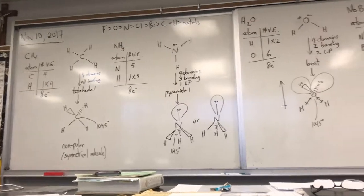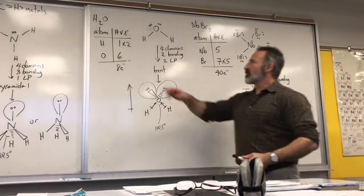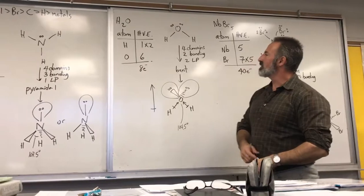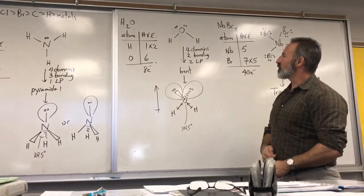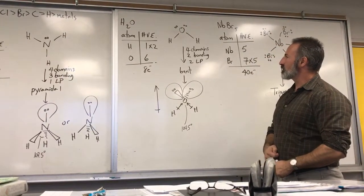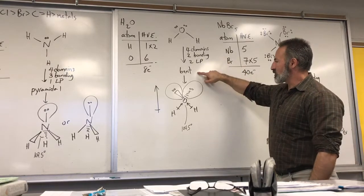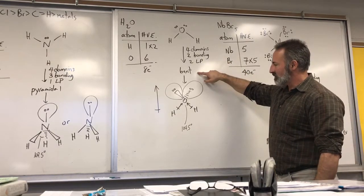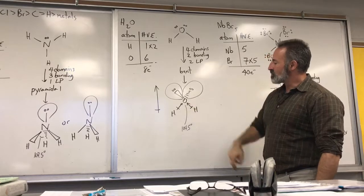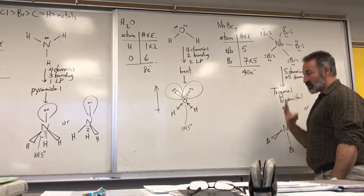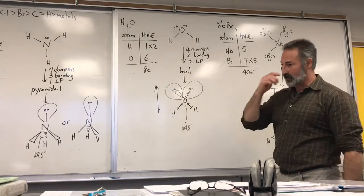Water also has eight valence electrons: one for each hydrogen and six for the oxygen. That creates four domains in the Lewis structure — two bonding and two lone pairs — which suggests a bent geometry. The bond angle between the hydrogen atoms is 104.5° because there are two lone pairs instead of one as in ammonia.